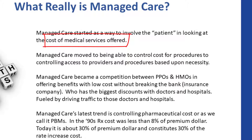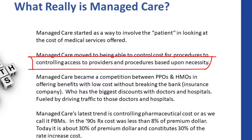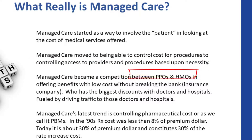What managed care really started with was the involvement of the patient in cost containment — deductibles, out-of-pocket, and coinsurance all started as a way to control cost. Then it went from controlling cost to controlling access. The way that became popular in the nineties was the PPO, then the HMO and POS competition. They really ramped it up, arranging fee discounts, who had the better discounts, who had the limits, who controlled it better — co-pays, et cetera.